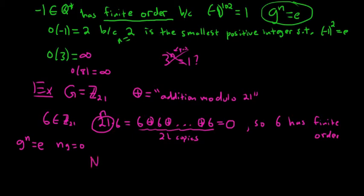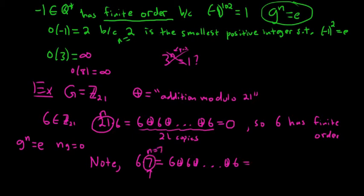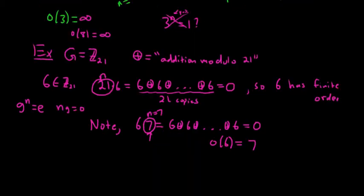But note that seven times six, meaning six added to itself seven times, gives 42, and 42 modulo 21 equals zero as well — since 21 goes into 42 twice with remainder zero. So seven is the smallest positive integer for which this is true, and the order of six is actually seven. Keep in mind: for multiplication, it's g to the n equals e; for addition, it's n times g equals zero.